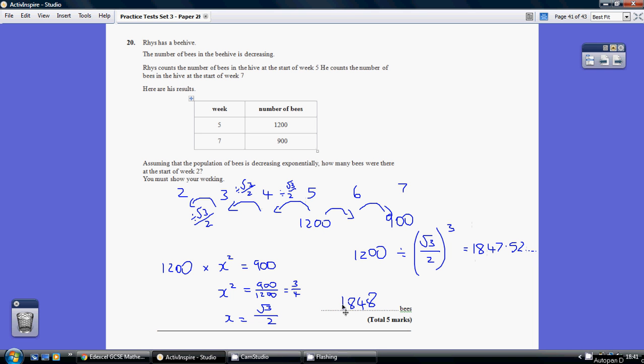Just to clarify, we've got 1,848 bees at the start of week 2. Multiply by root 3 over 2 to here, multiply by root 3 over 2 to here, multiply by root 3 over 2 to here—that's our 1,200. Then multiply by root 3 over 2 to start of week 6, and root 3 over 2 again takes us to our 900. So final answer: 1,848.